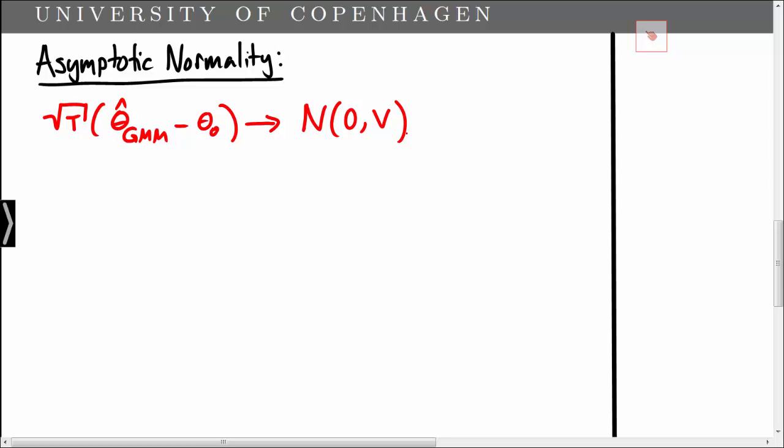Here we note that the asymptotic covariance matrix V depends on the first derivative of the function F, which is related to the moment conditions. It depends on the asymptotic covariance of the moments and on the choice of weight matrix W.